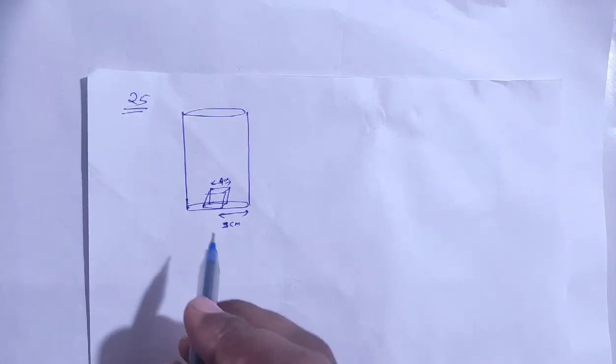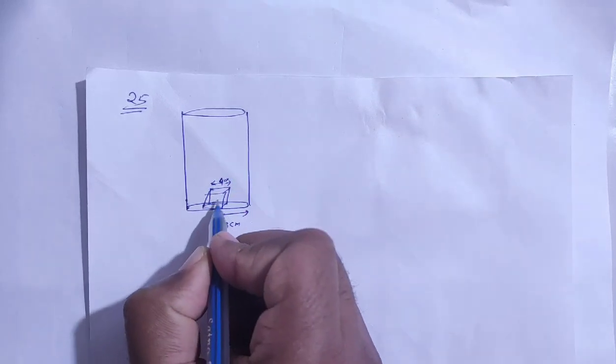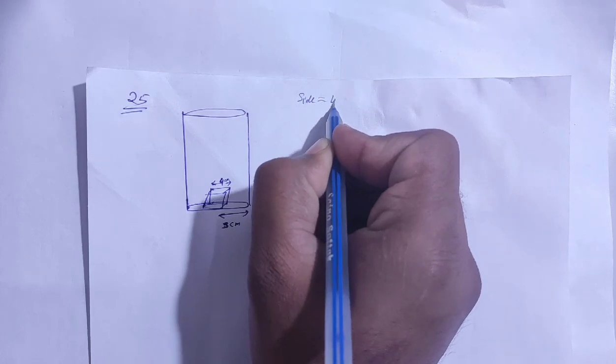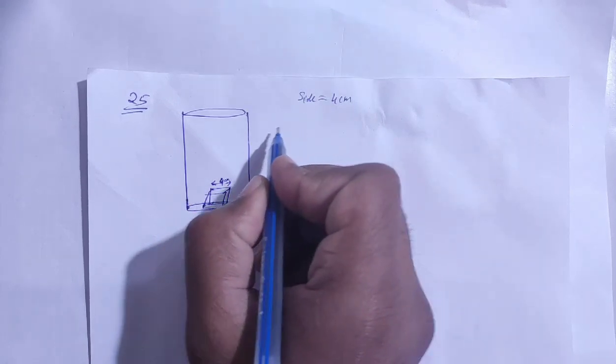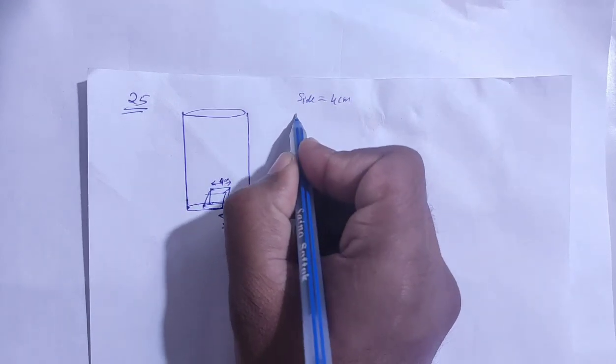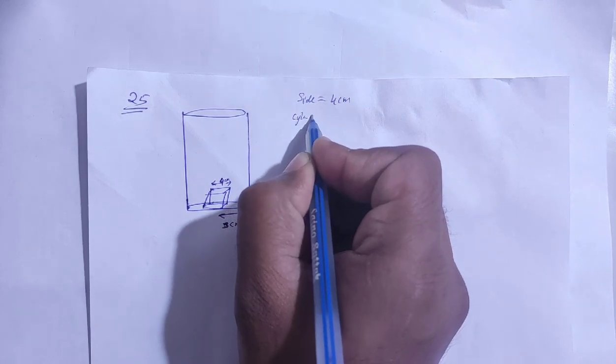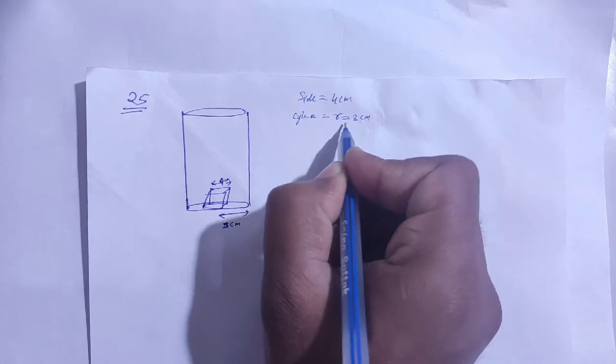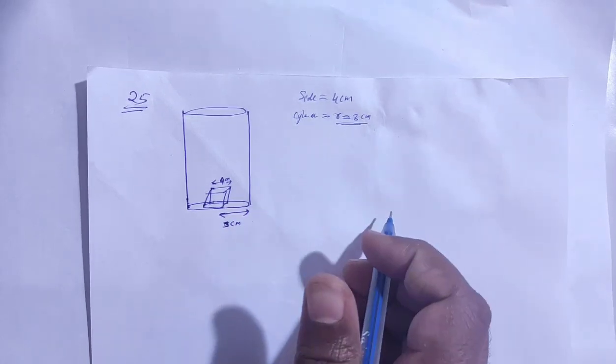So what do we do? Ice given is a cube, which side is given? The side given is 4 cm and the cylinder, what is the radius? The radius is 3 cm. The diameter is 6 cm, the radius is 3 cm.